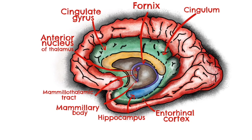Then they move on to the entorhinal cortex, which is a specific area of the parahippocampal gyrus. Finally, they return back to the hippocampus, which completes the loop.